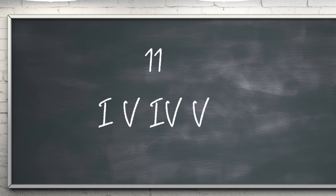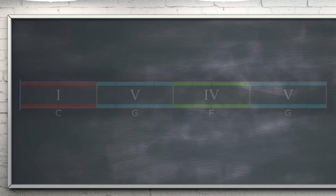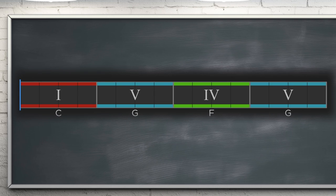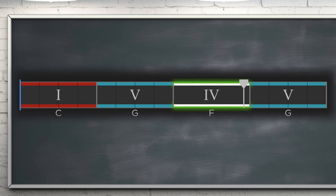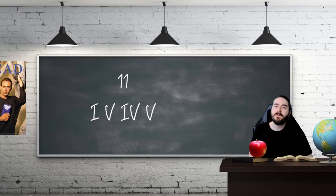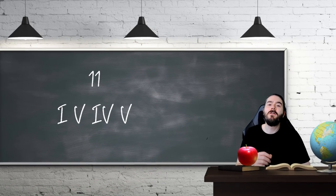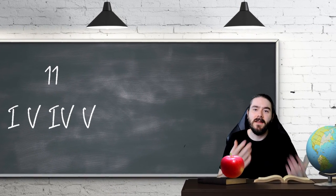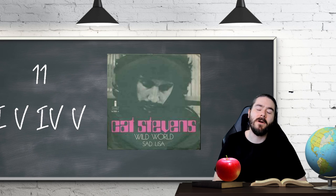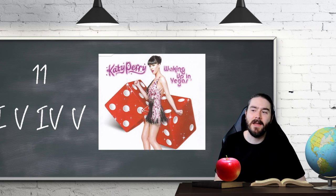At number 11 is an all-major example: 1-5-4-5. Depending on the mood you want to achieve, you can focus more on major or minor chords. Examples here include Wild World by Cat Stevens and Waking Up in Vegas by Katy Perry.